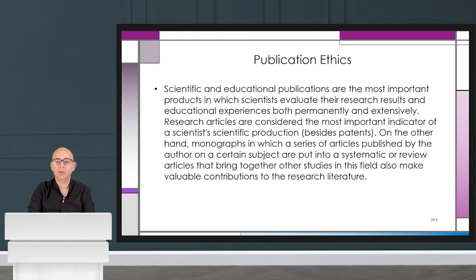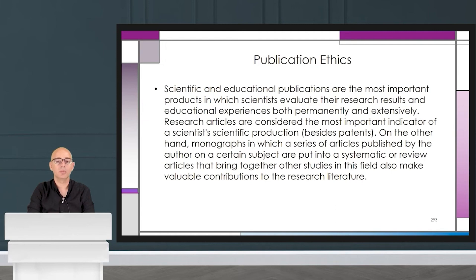Scientists are considered the most important indicator of a scientist's scientific production. Monographs — in which a series of articles published by the author on a certain subject are put into a systematic form — and review articles that bring together other studies in this field also make valuable contributions to the research literature.